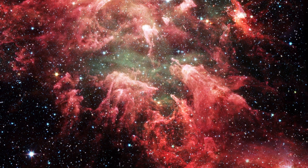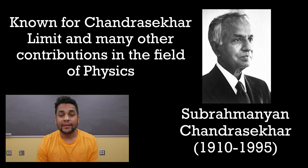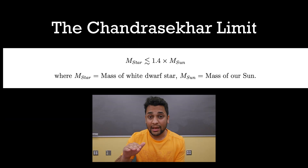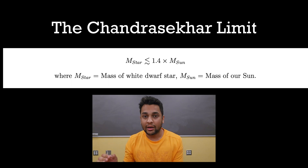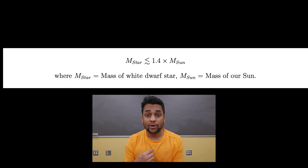We talked about the small. Let's talk about the large. We are now entering the realm of stars. Physics puts a limit even on massive objects like stars. This is called the Chandrasekhar limit, named after the remarkable astrophysicist Subramanyan Chandrasekhar. This limit establishes a maximum mass that a stable white dwarf star can have, which is roughly 1.4 times the mass of our Sun.